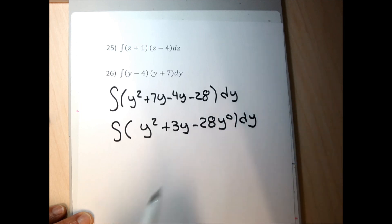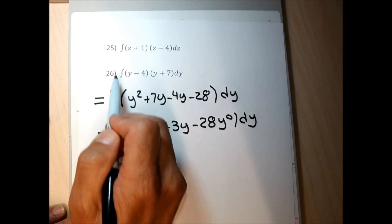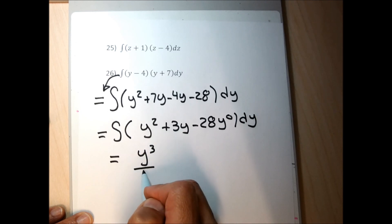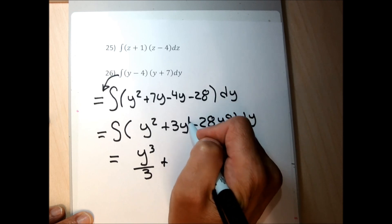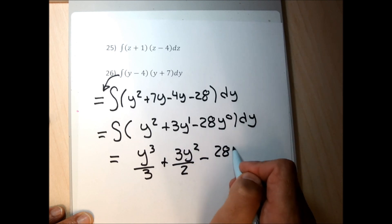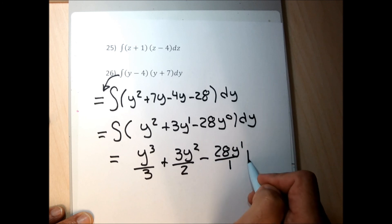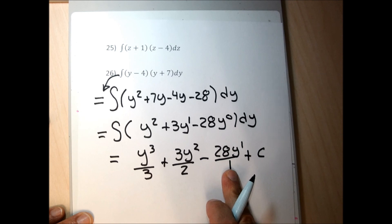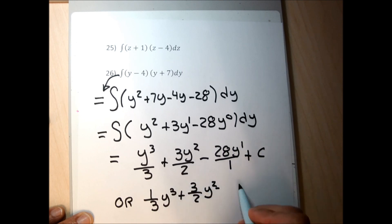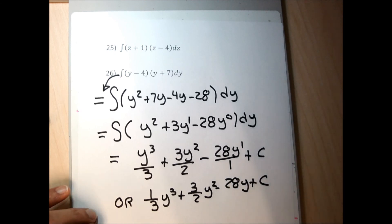Now dropping the antiderivative symbol: first term, add 1 to exponent, divide by new exponent, giving y cubed over 3. Second term, exponent was 1, add 1 to get 2, divide by 2, giving 3y squared over 2. Last term, add 1 to 0, divide by 1, giving minus 28y. Tack on plus C. The answer is 1/3 y cubed plus 3/2 y squared minus 28y plus C.